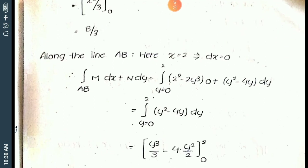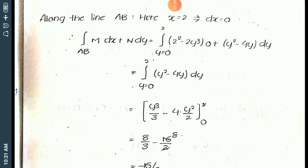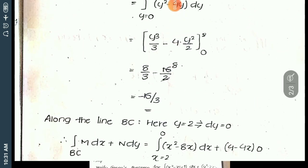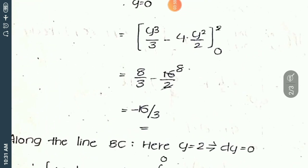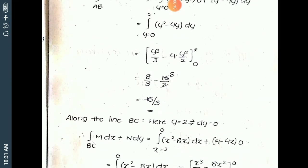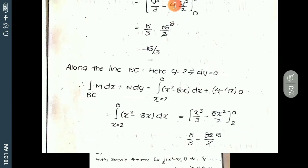Similarly, along line AB, the constant coordinate is x = 2, so dx = 0. Substituting these values into M dx + N dy and simplifying, the answer is −16/3.